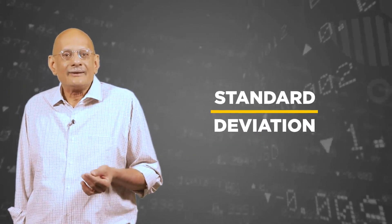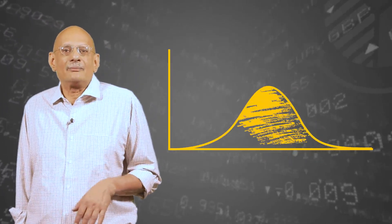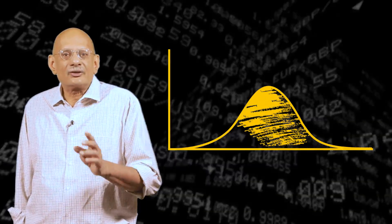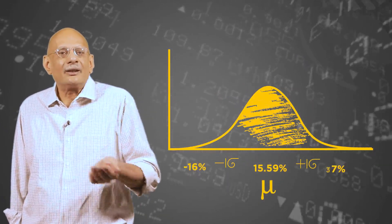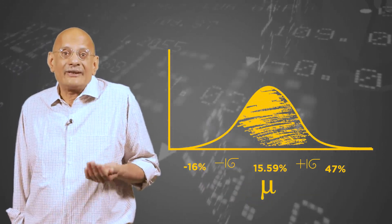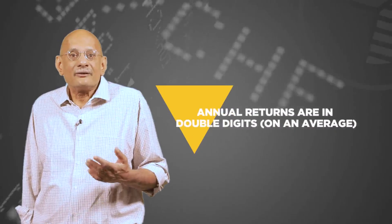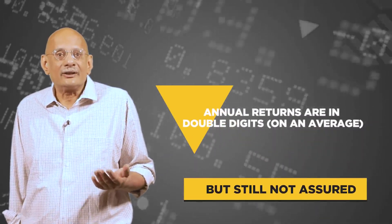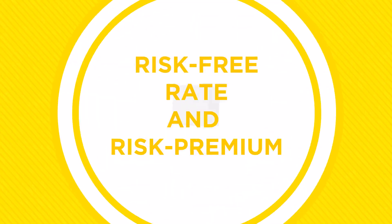Another way to read the standard deviation is to think that if the distribution were normal, roughly two-thirds of the time returns can be one standard deviation around the mean. This leads to a spread from negative 16% to positive 47%. Remember, this is suspect since the annual return distribution wasn't that normal anyway, but it is still wide variation. These annual returns, even though the average is in double digits for the last century, are certainly not assured.